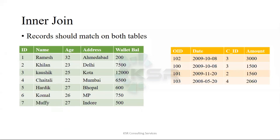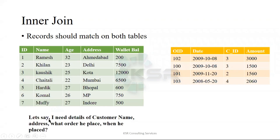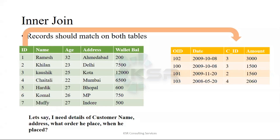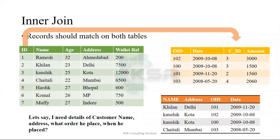Now, what is an inner join? You have the green table and you have the yellow table. The definition says a record should match on both tables — but never mind about the definition. Let's jump into the example. When I want the details of a customer — name, address, what order he placed, when did he place — these are the requirements. If I do a join on the common column, I will get this result.